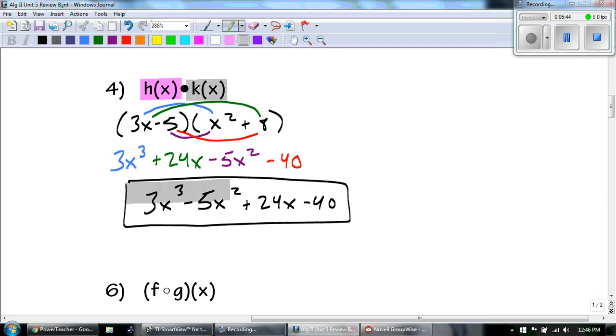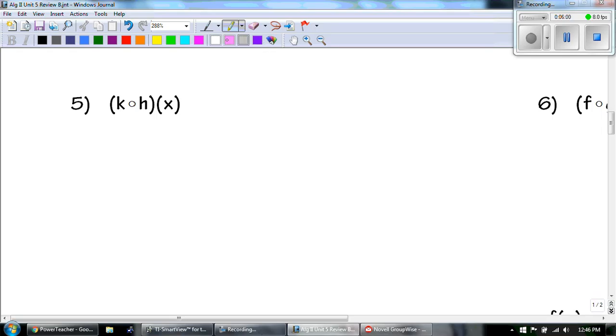So we get 3x cubed. 3x times 8 would be 24x. Negative 5 times x squared is a negative 5x squared. And then negative 5 times 8, which is negative 40.